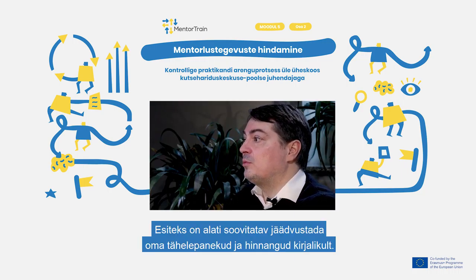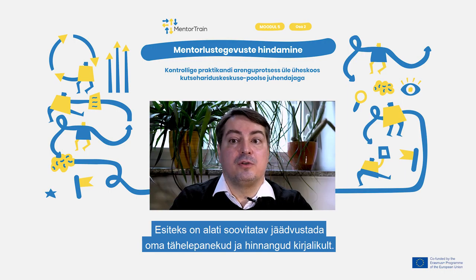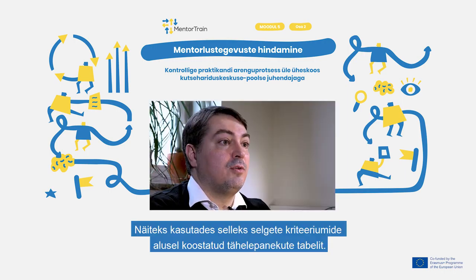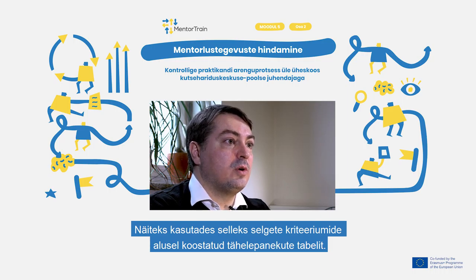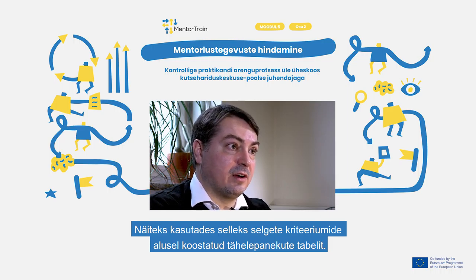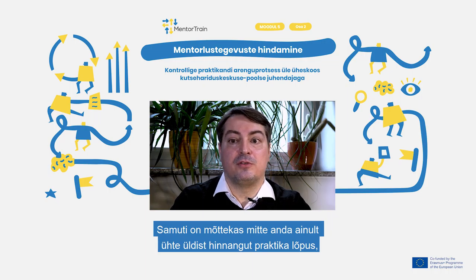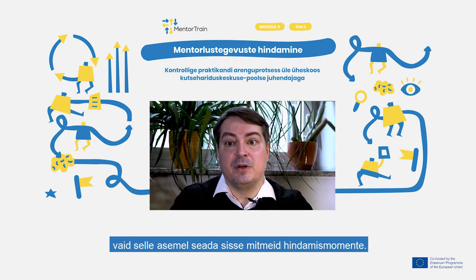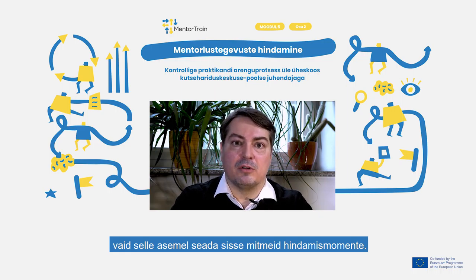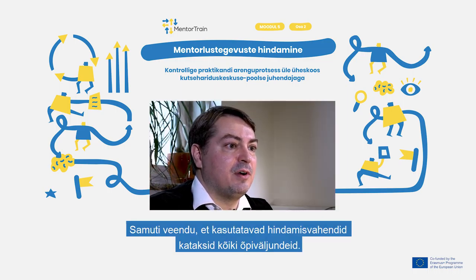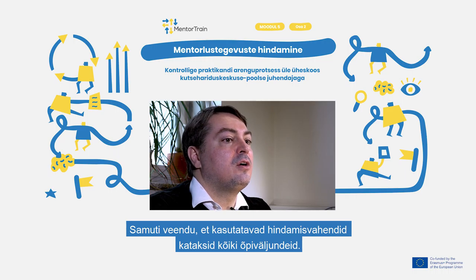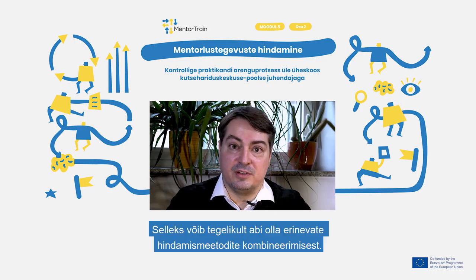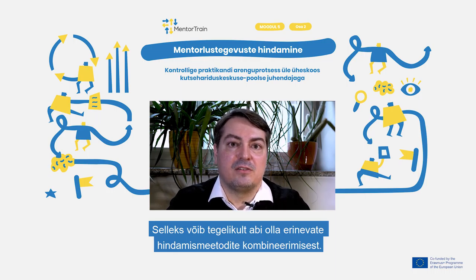Firstly, it is always advisable to keep a written record of your observations and assessment — for example, by using an observation grid with clear criteria. It would also be useful to not have just one overall assessment at the end of the apprenticeship, but instead to build in a number of evaluation moments. Also, make sure that the evaluation instruments you use cover all the learning outcomes. For this, it can help to use a combination of different evaluation methods.